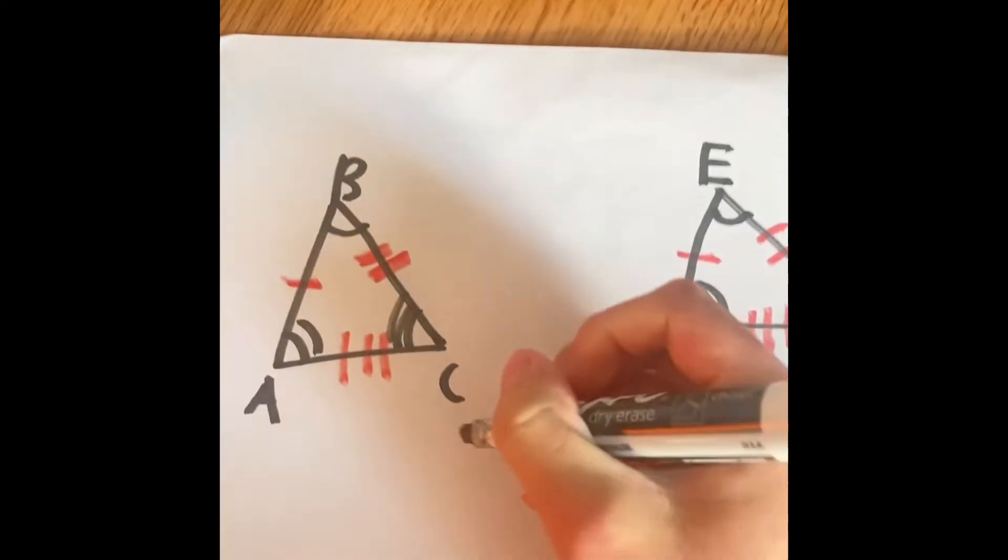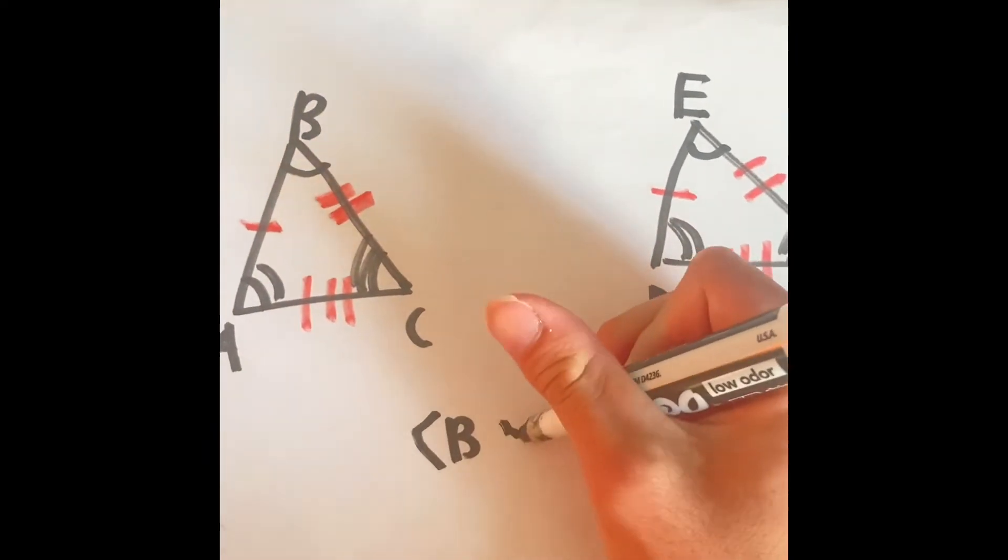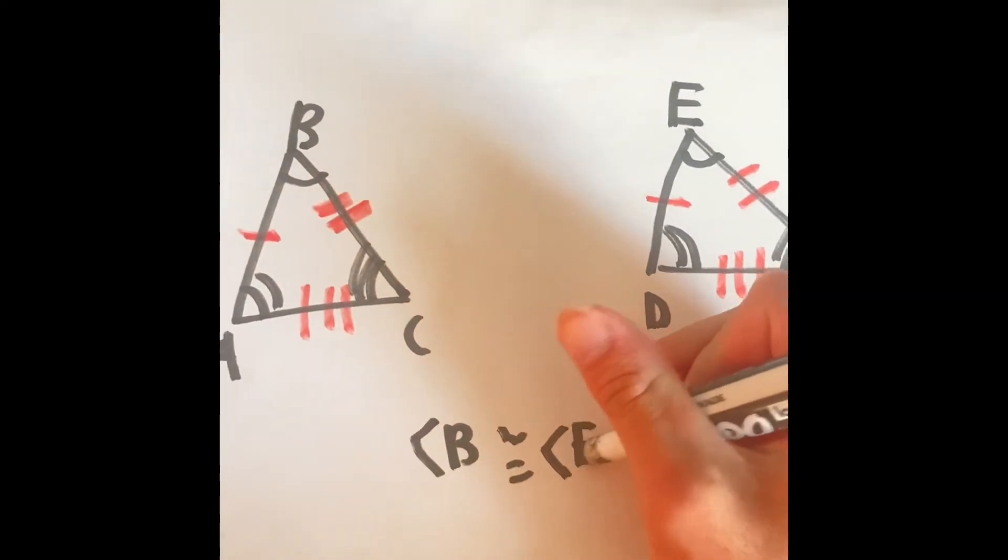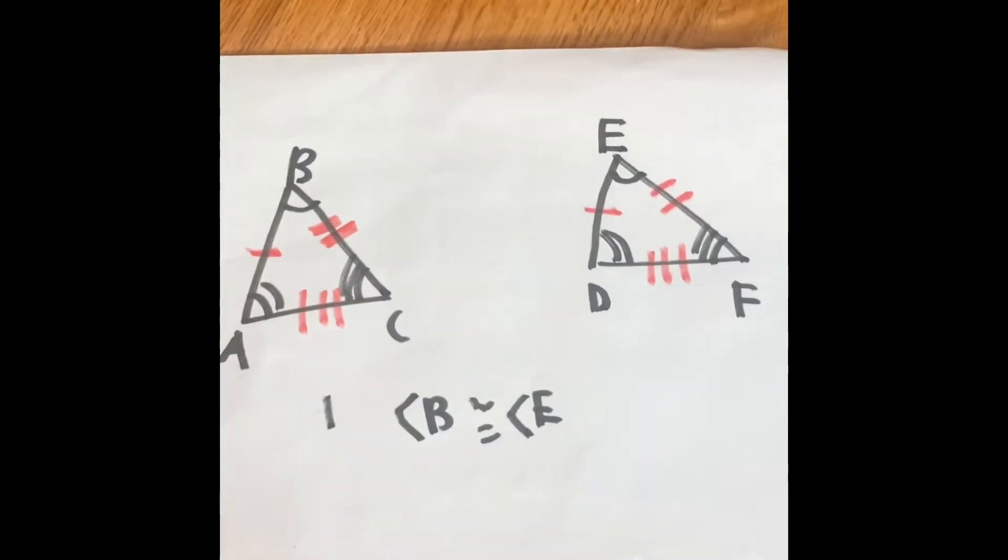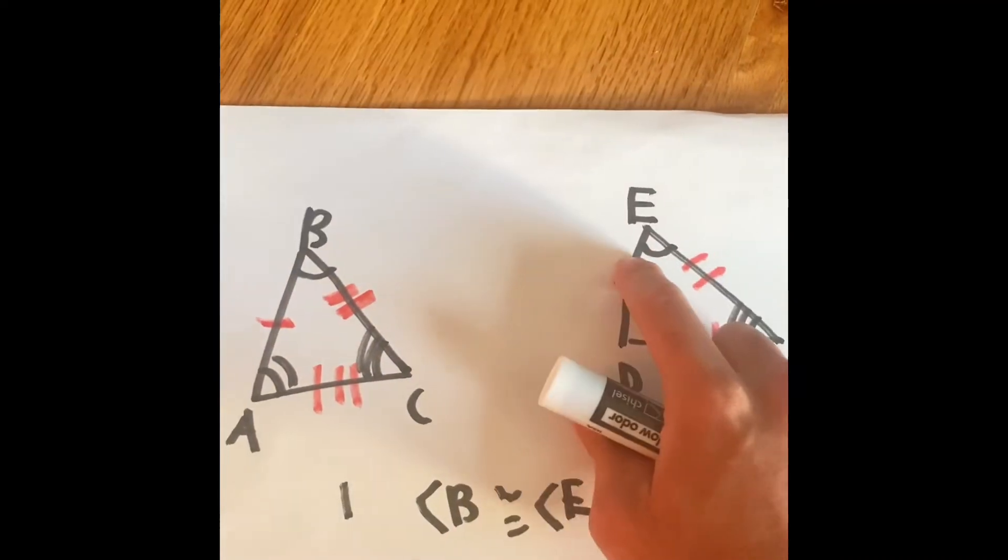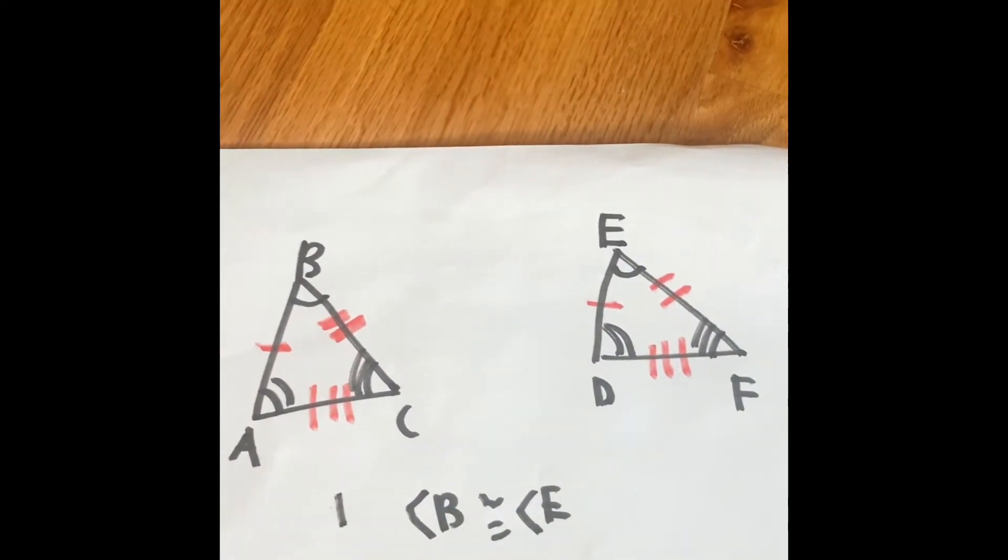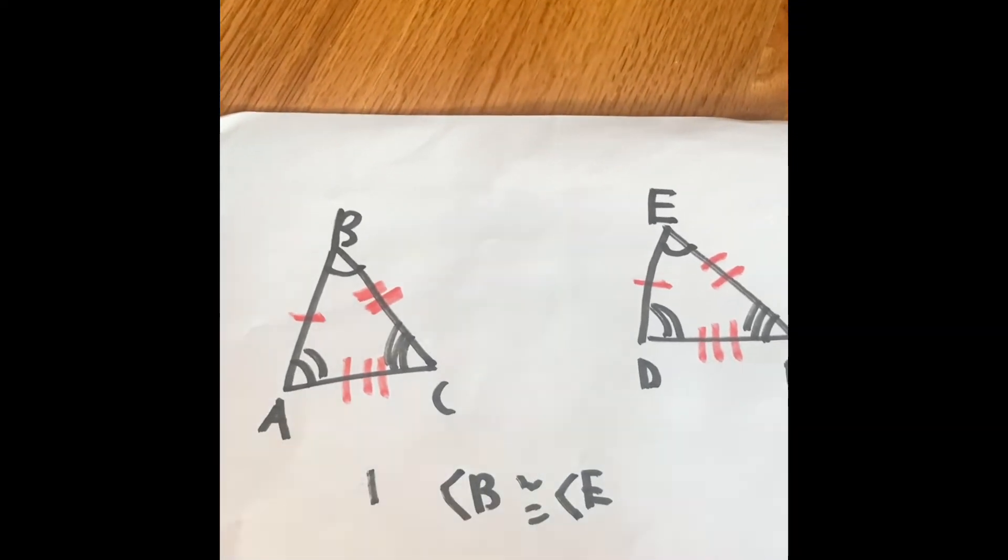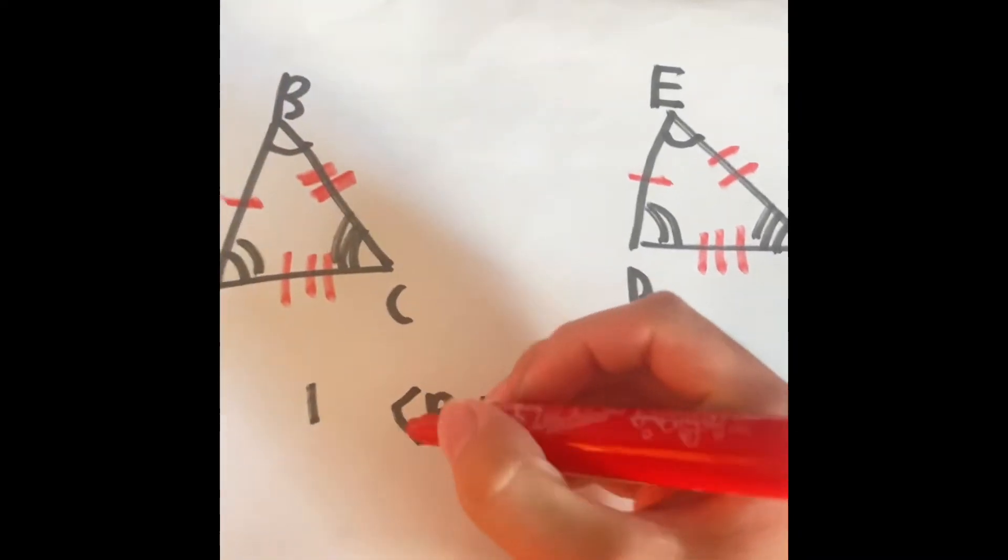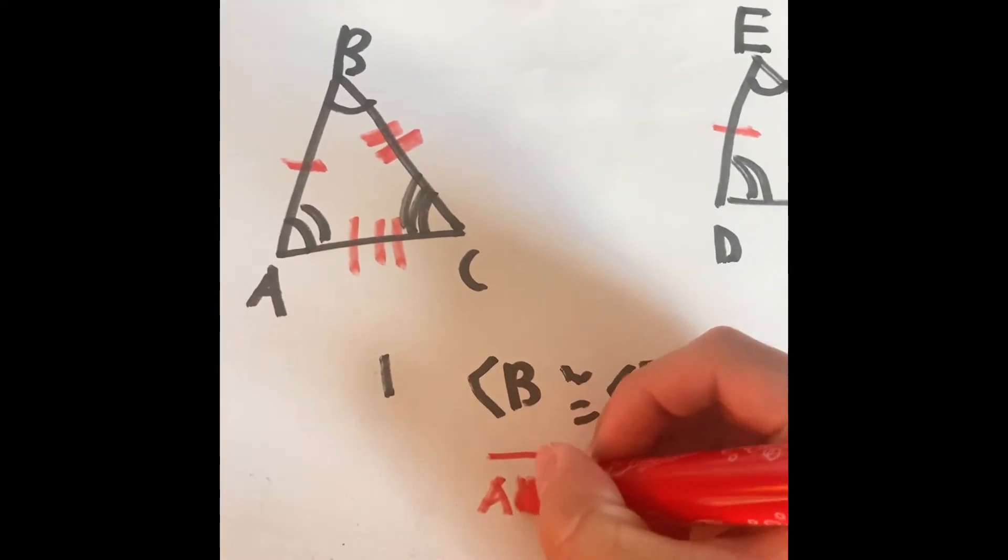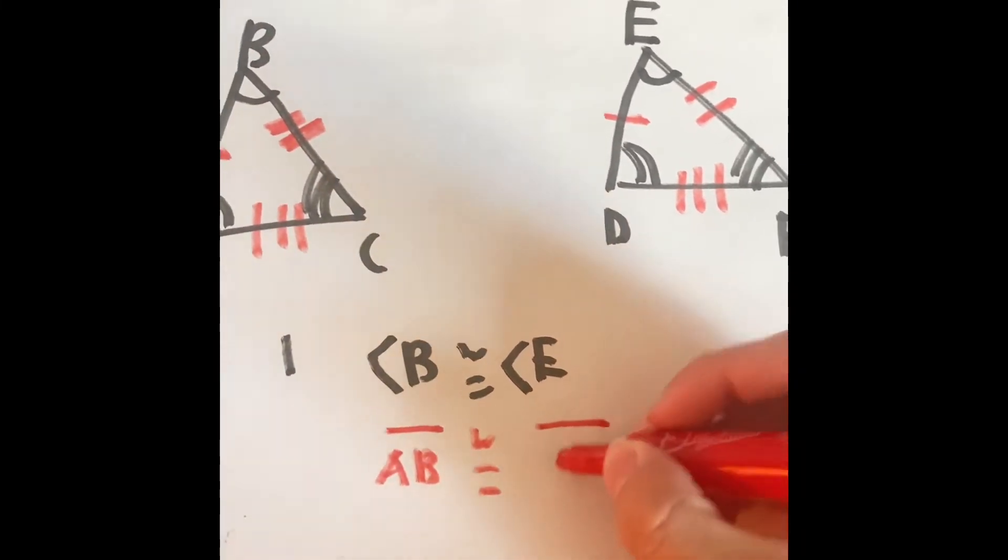For example, we can say that angle B is going to be congruent with angle E. That can be reason number one. That's because that angle and that angle are both congruent. We could also do that with segments too. We can say that segment AB is congruent with segment DE.